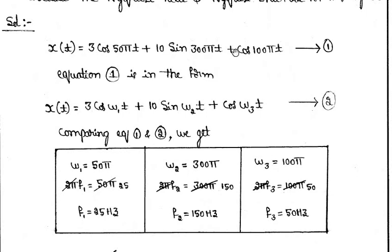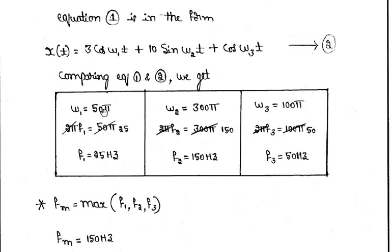First, write down the given expression and identify the angular frequencies. Comparing with cos(ω₁t), sin(ω₂t), cos(ω₃t): ω₁ = 50π, ω₂ = 300π, and ω₃ = 100π. From these we calculate the corresponding frequencies: f₁ = 50π/(2π) = 25 Hz, f₂ = 300π/(2π) = 150 Hz, and f₃ = 100π/(2π) = 50 Hz.